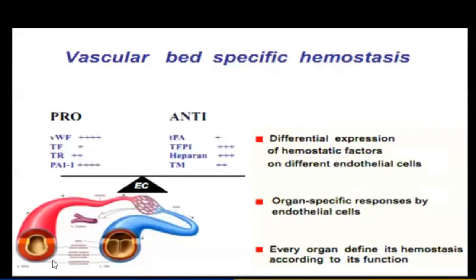Vascular bed-specific hemostasis involves differential expression of hemostatic factors in different endothelial cells and organ-specific responses. Endothelial cells in every organ define hemostasis according to function. The microcirculatory bed includes arteriole, precapillary, capillary, postcapillary, and venule.